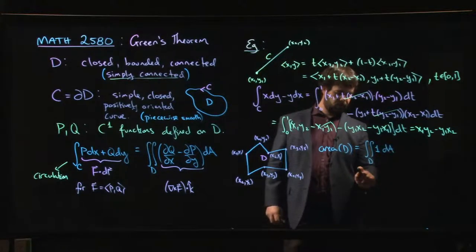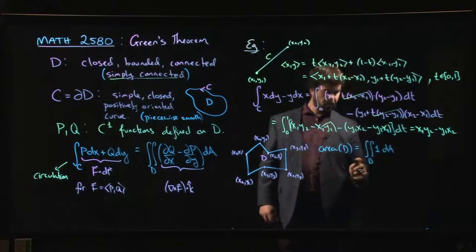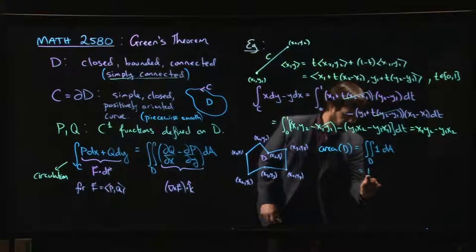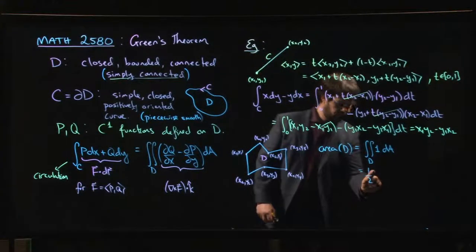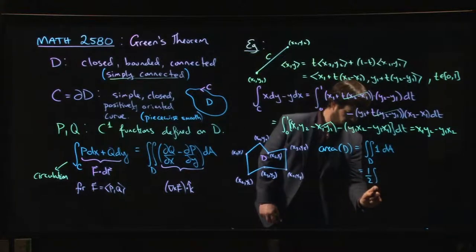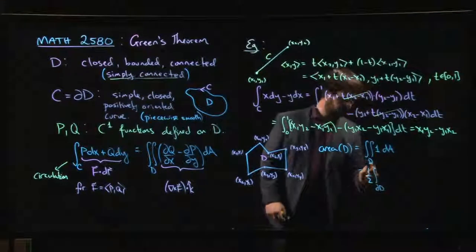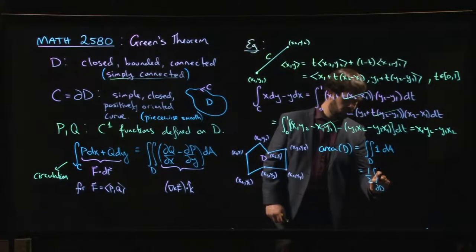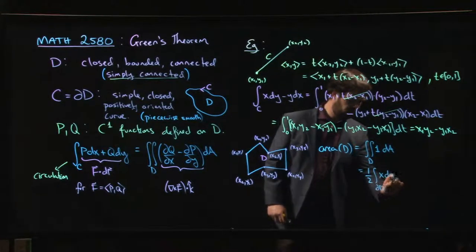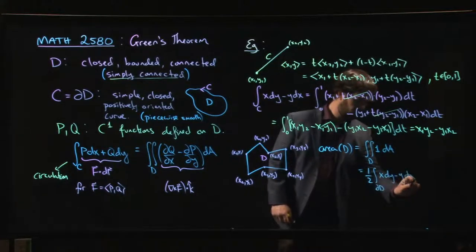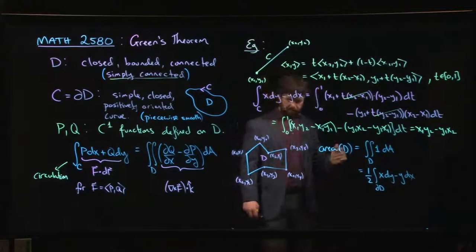But I know from Green's theorem that I could write that as one half times the integral over the boundary of D of xdy minus ydx.